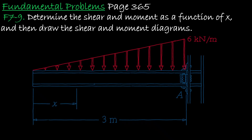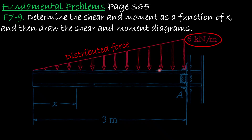In this problem we are asked to determine the shear and moment as a function of x and then draw the shear and moment diagram. We are given a distributed load that looks like a triangle at an intensity of six kilonewton per meter. This distributed load runs along three meters of the given beam, which starts from zero to three, and at three we have a fixed support.